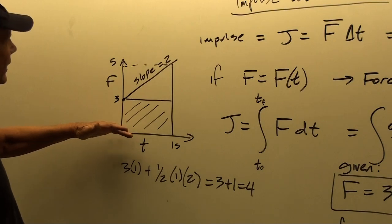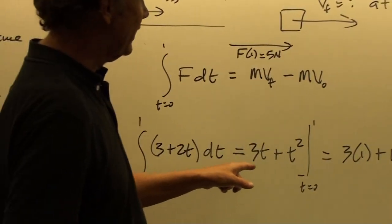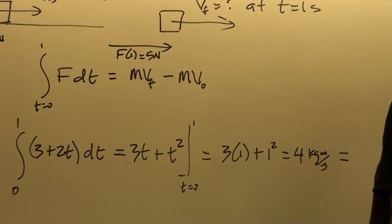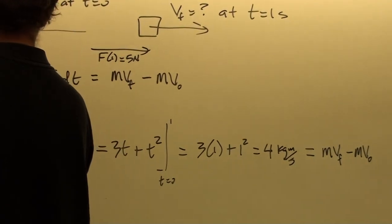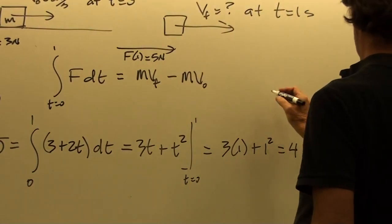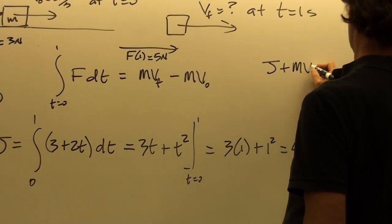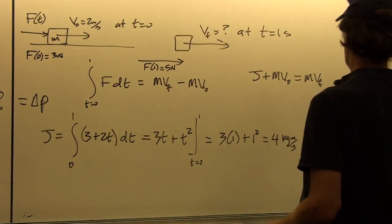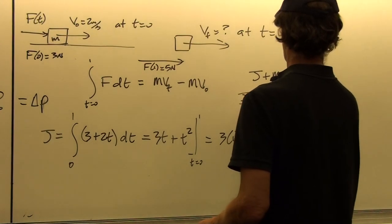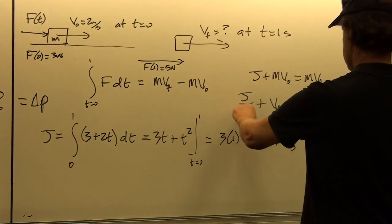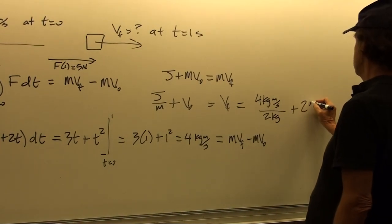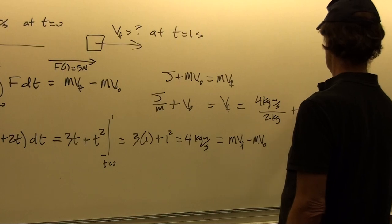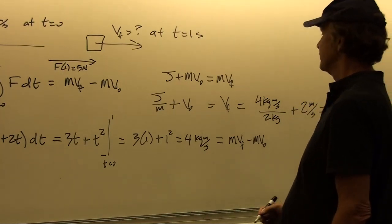That equals mv_final minus mv_initial. Our impulse is four kilogram-meters per second. Solving for v_final: v_final equals J over m plus v_initial equals four divided by two plus two, giving four meters per second. That is how we solve a problem where a variable force acts over time: integrate the force versus time function, find the area under the curve, and set it equal to the change in momentum.